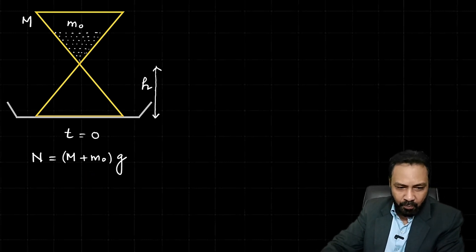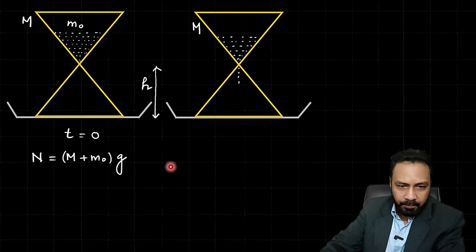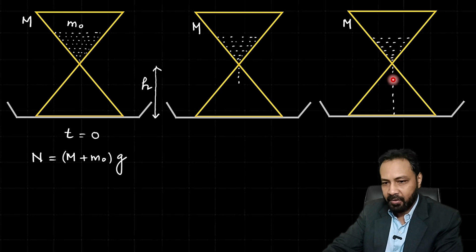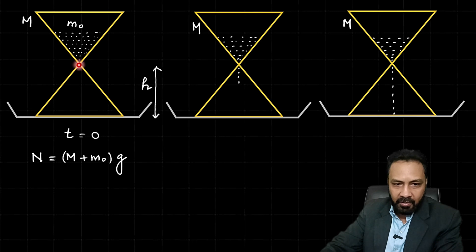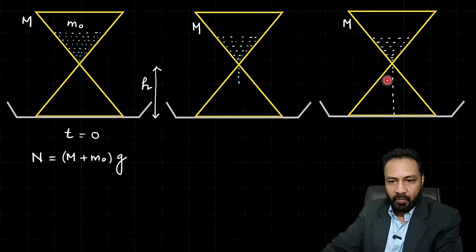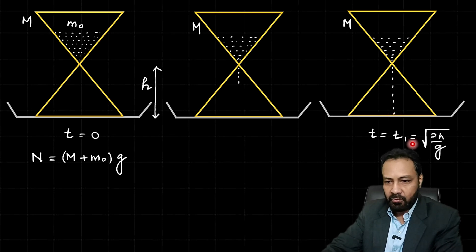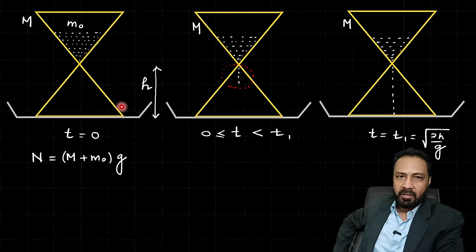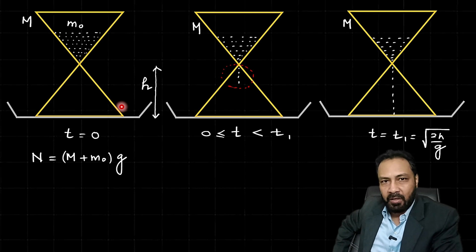A little later, some part of the sand has come down. I want to examine the moment when the first sand particle reaches the floor D. After leaving the neck, all sand particles move under gravity with acceleration g — there is no interconnection between particles. The particle that leaves at t = 0 will reach the floor at time t₁ = √(2h/g). So between t = 0 and t = t₁, in time t, a mass λt has come down.